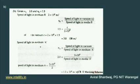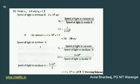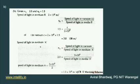For the numerical: N_A = 2.0, N_B = 1.5, and the speed of light in medium B is 2 × 10⁸ m/s. Using the formula N_B = C / V_B, put in the values: 1.5 = C / (2 × 10⁸), so C = 3 × 10⁸ m/s — which is the speed of light in vacuum. For medium A, use N_A = C / V_A: put in N_A = 2.0 and C = 3 × 10⁸, and find the speed of light in medium A. The answer is 1.5 × 10⁸ m/s.